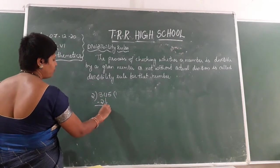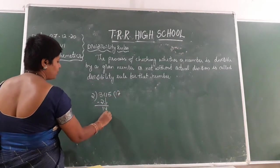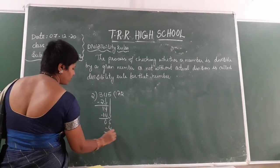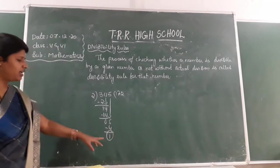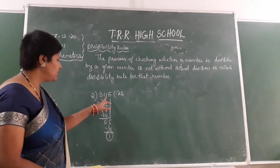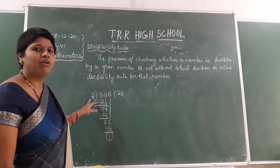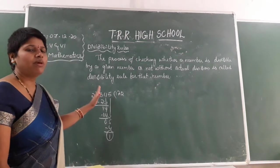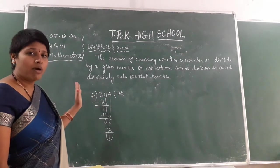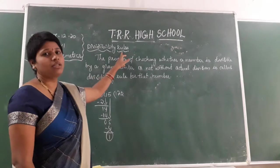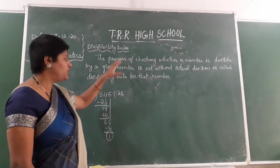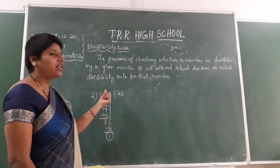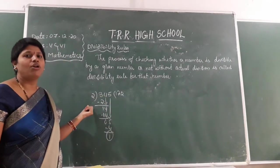Performing the division: 3 divided by 2 gives 1, bring down 4, giving 14; 2 sevens are 14, bring down 5; remainder is 1. So when you get remainder 1, you can say that this particular number is not divisible by 2. If you get remainder 0, then the number is divisible. But by using divisibility rules — without doing actual division — you can say whether a given number is divisible by a particular number or not.